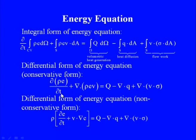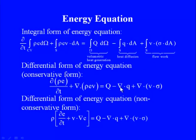The conservative form of the energy equation is: ∂(ρe)/∂t + ∇·(ρev) = Q − ∇·q + ∇·(v·σ), where σ is the viscous component of the stress tensor. This is the conservative form because all terms are expressed as time derivatives or divergences of some quantity.